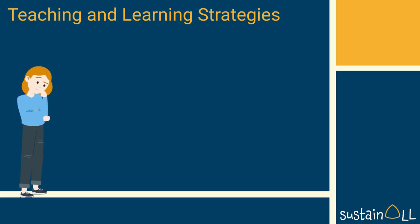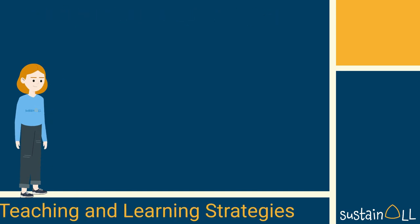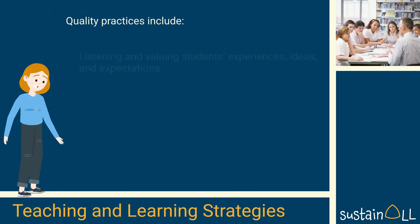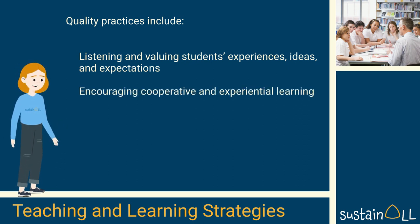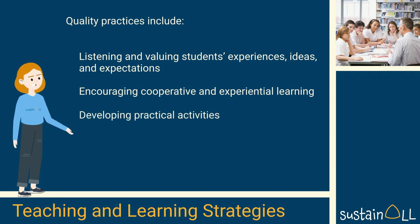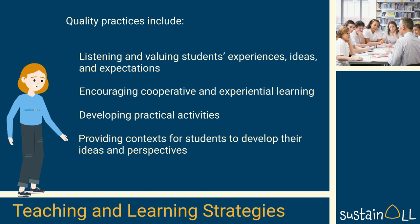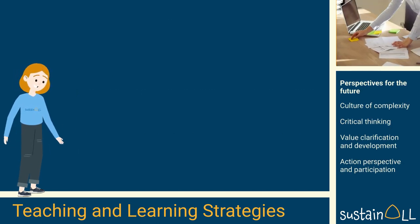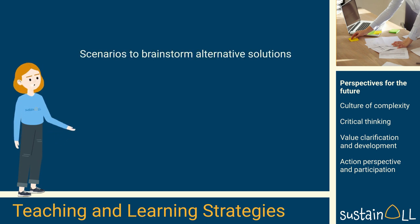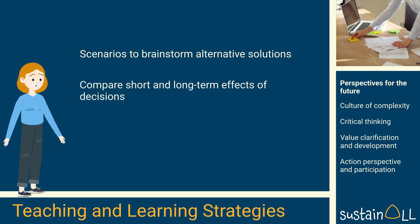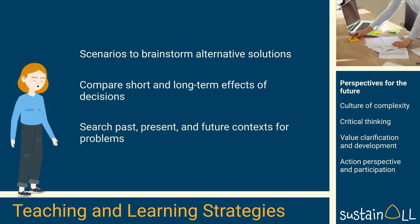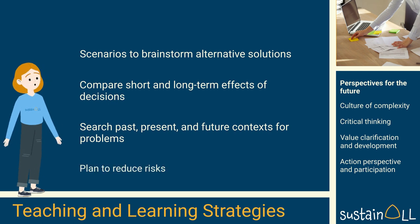Teaching and learning strategies to promote students' engagement in real-world problems and transformative learning include quality practices such as listening and valuing students' experiences, ideas, and expectations, encouraging cooperative and experiential learning, developing practical activities, and providing contexts for students to develop their own ideas and perspectives. To help students build perspectives for the future, they should be given scenarios to brainstorm alternative solutions, compare short and long-term effects of decisions, search for past, present, and future contexts for problems, and plan to reduce risks.